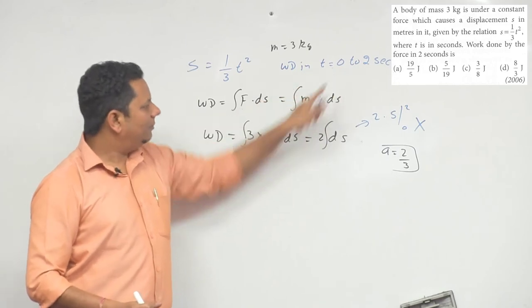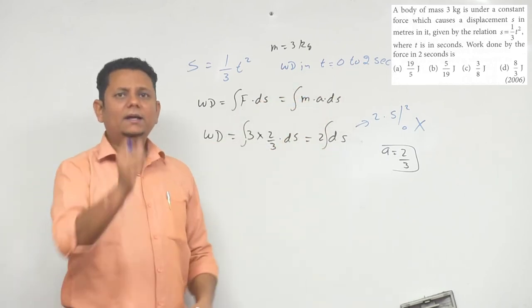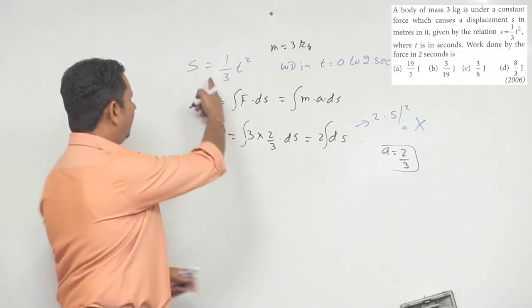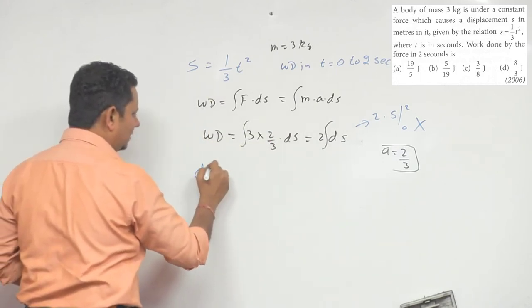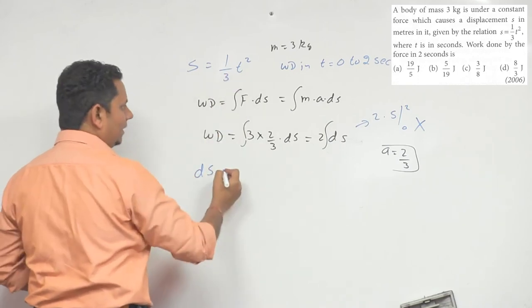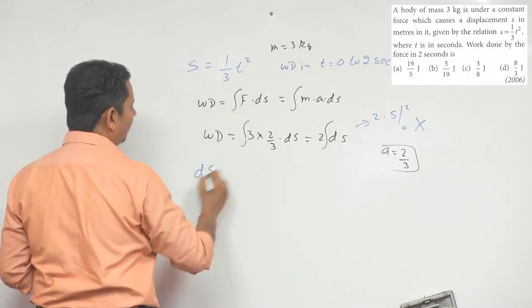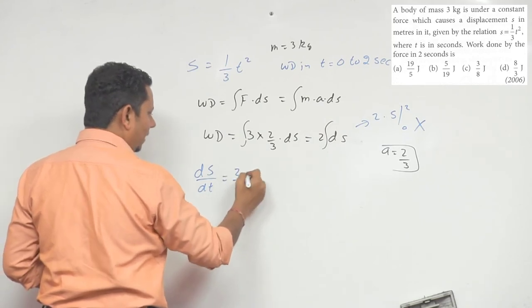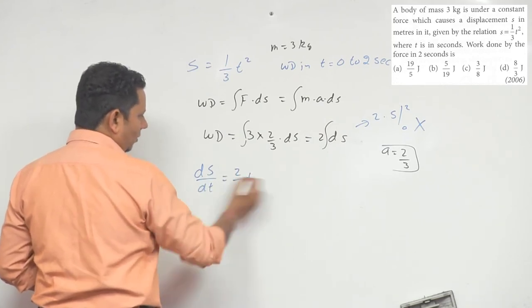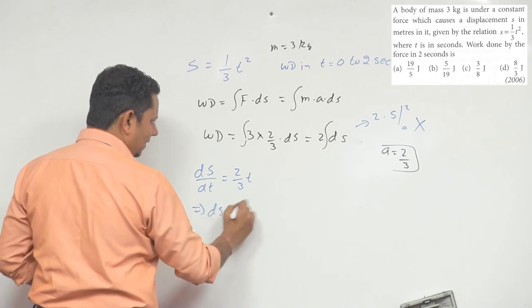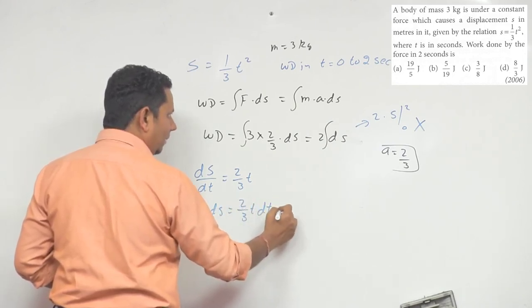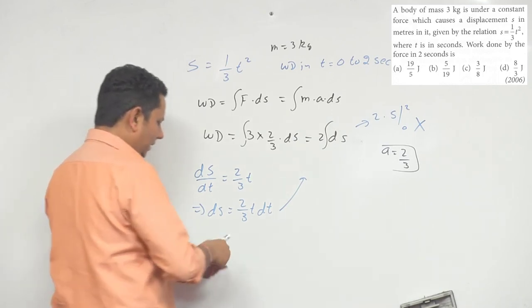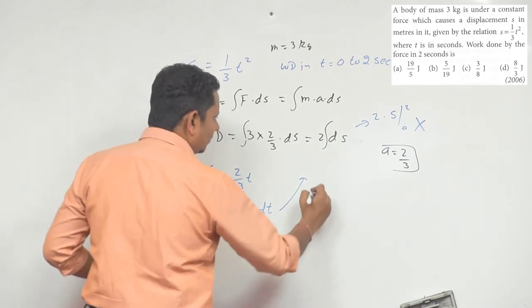To do this, we need to convert ds in terms of time. When we differentiate the displacement equation, ds/dt = (2/3)t, which implies ds = (2/3)t dt. Now we will insert this value, so our work done becomes a simple problem.